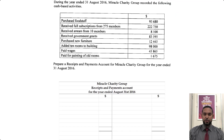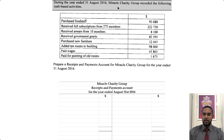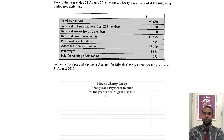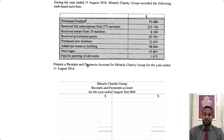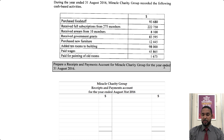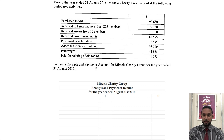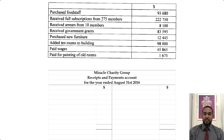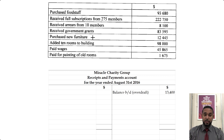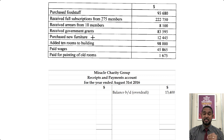Let's take a look at part B. During the year ended 31st August 2016, Miracle Charity Group recorded the following cash-based activities. They want the Receipts and Payments account for Miracle Charity Group for the year ended 31st August 2016. A receipts and payments account is like a cash book with one column — it's just their bank account. If you remember from above, they had a bank overdraft at the start of $13,400. That goes on the credit side because a bank overdraft is a current liability, and liabilities have credit balances at start.